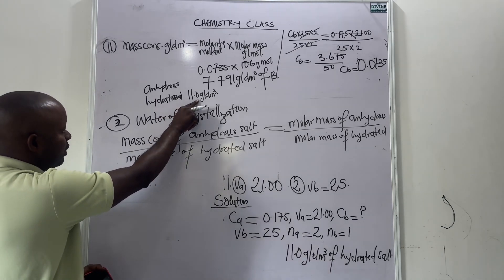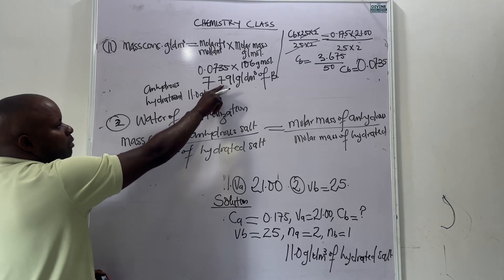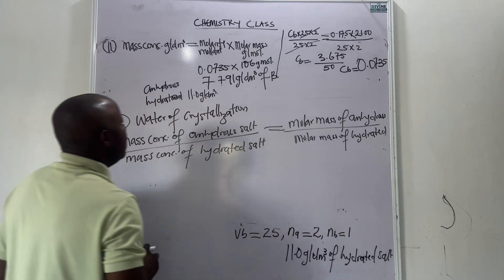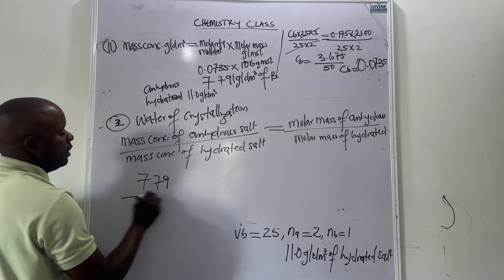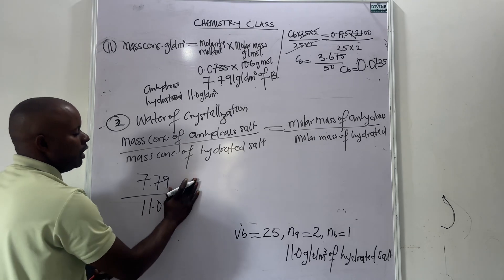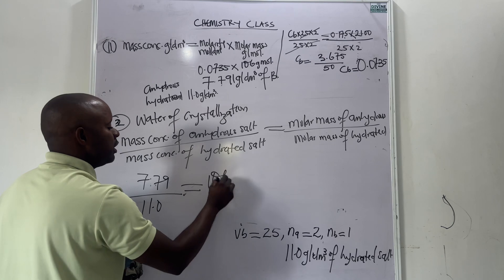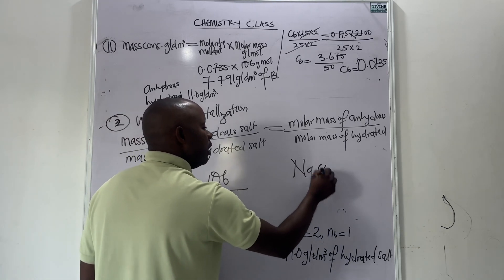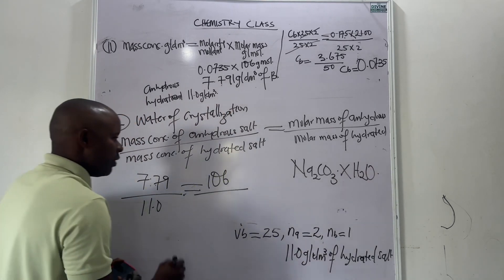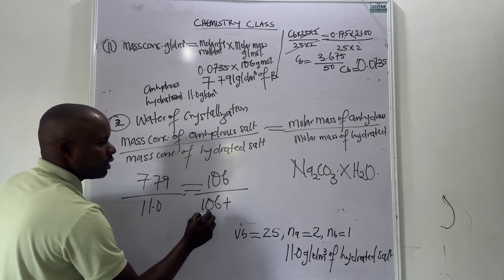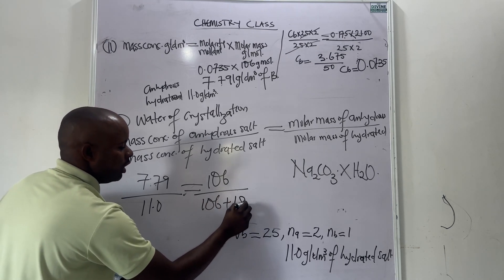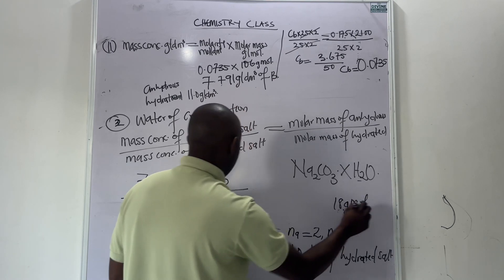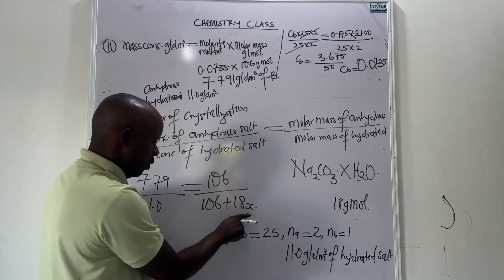So: 7.79 over 11.0 equals the molar mass of the anhydrous salt, which is 106, over the molar mass of the hydrated salt. The molar mass of the hydrated carbonate is 106 plus S times 18, since the molar mass of water is 18 grams per mole, and there are S molecules of water of crystallization. So we have 7.79 over 11.0 equals 106 over (106 plus 18S).